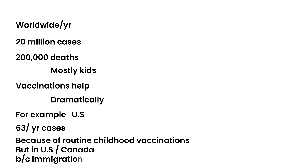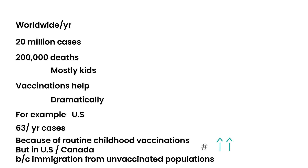However, this number has been rising in the United States and Canada because of immigrants coming from unvaccinated populations. You have 63 cases a year only in a population that receives regular childhood immunizations, versus 20 million cases worldwide in geographic areas where children do not receive regular childhood vaccinations.